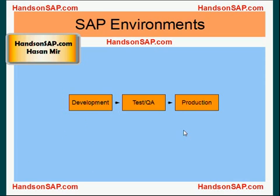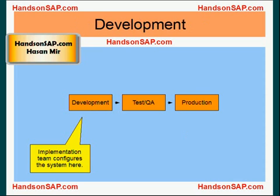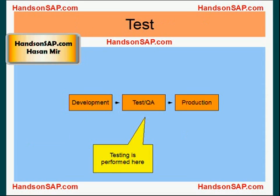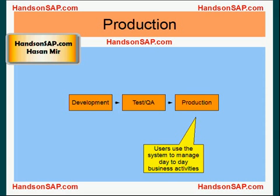In a development environment, the implementation team configures the system. Once the system is configured, testing is performed in the test or QA environment. Once the system passes the test, it is promoted to production. QA stands for quality assurance. End users use the system on a day-to-day basis in the production environment to manage the business.